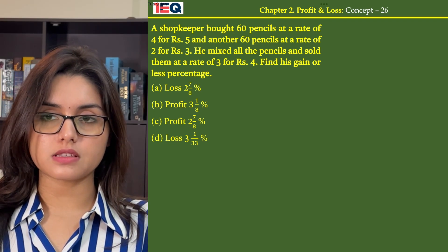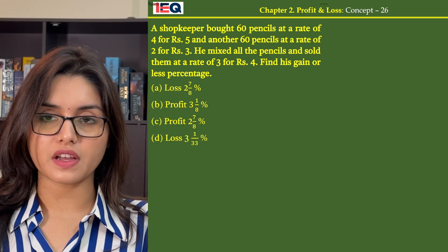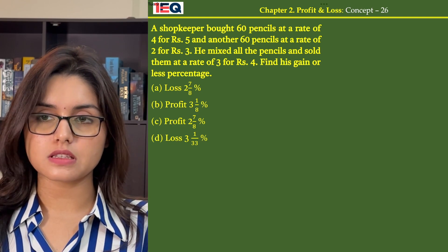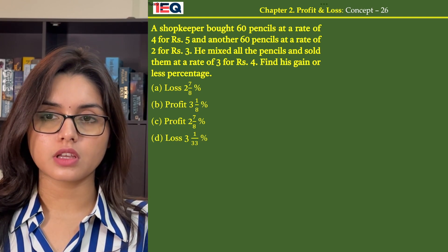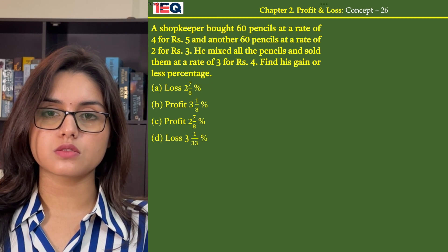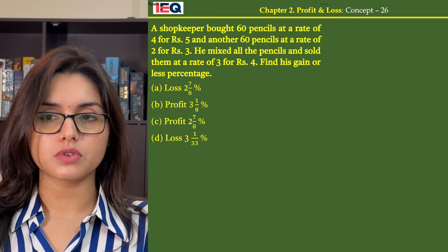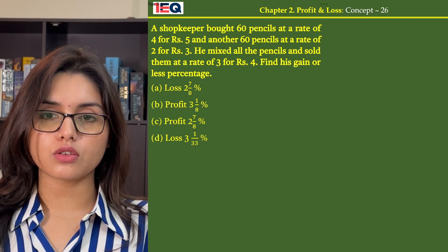A shopkeeper bought 60 pencils at a rate of 4 for Rs 5 and another 60 pencils at a rate of 2 for Rs 3. He mixed all the pencils and sold them at a rate of 3 for Rs 4. Find his gain or loss percentage.